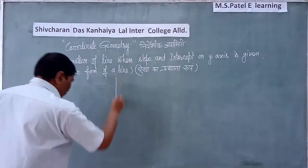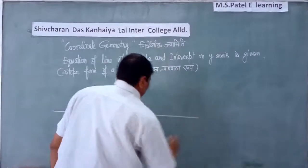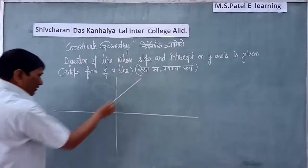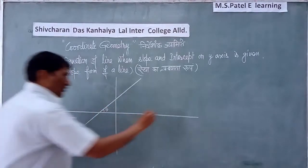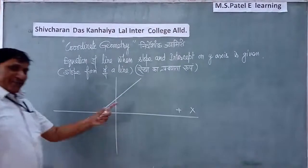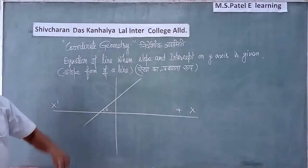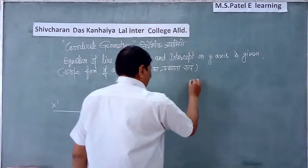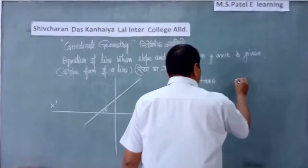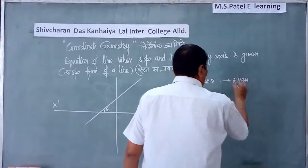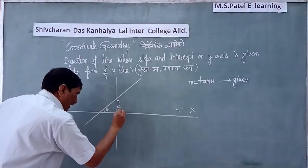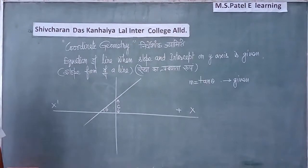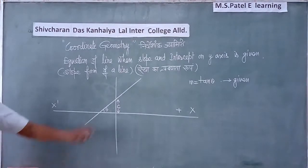Here are the two axes, and suppose this one is the line. This line makes an angle theta with the positive x-axis. The slope m is equal to tan theta. It is also given that the line cuts an intercept of length c on the y-axis.